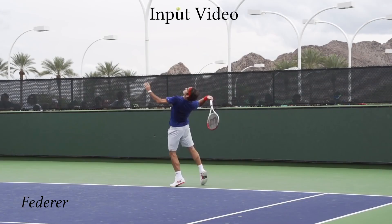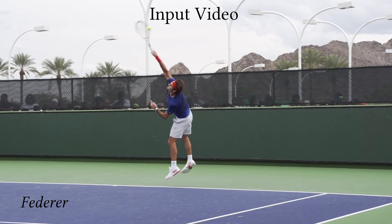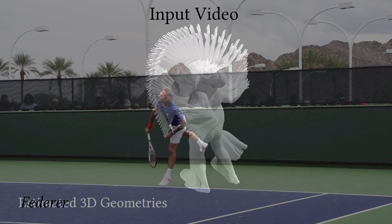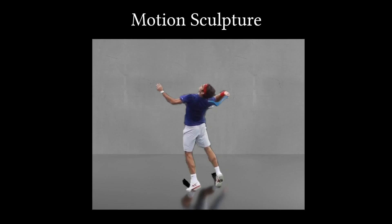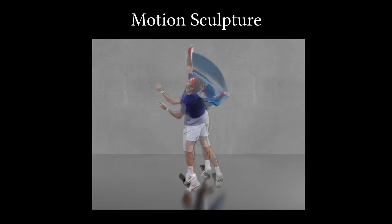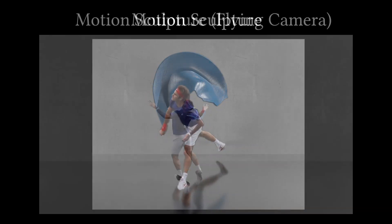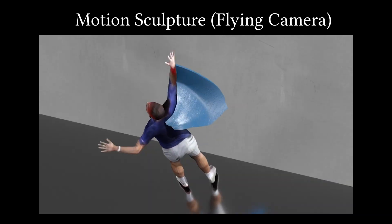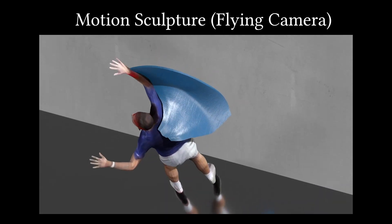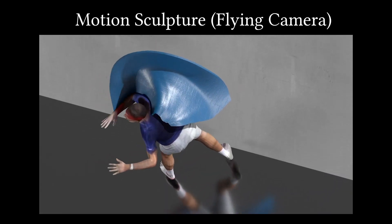Here we show more motion sculptures generated from internet videos. From the sculpture of Roger Federer's serving, we see how his arm bends during the serve. Since we have full 3D information, we can reenact the serve from novel viewpoints where there isn't a camera.